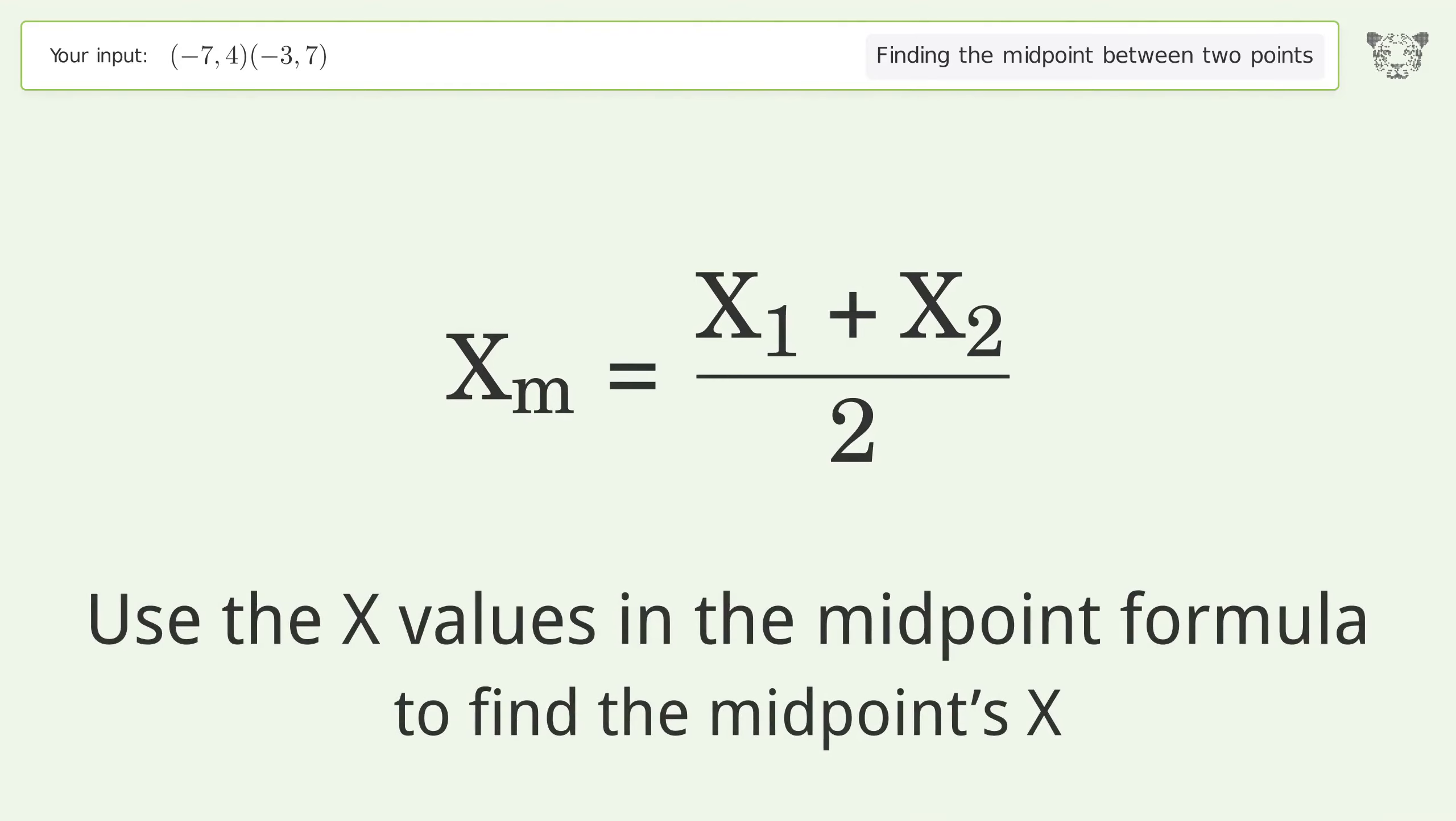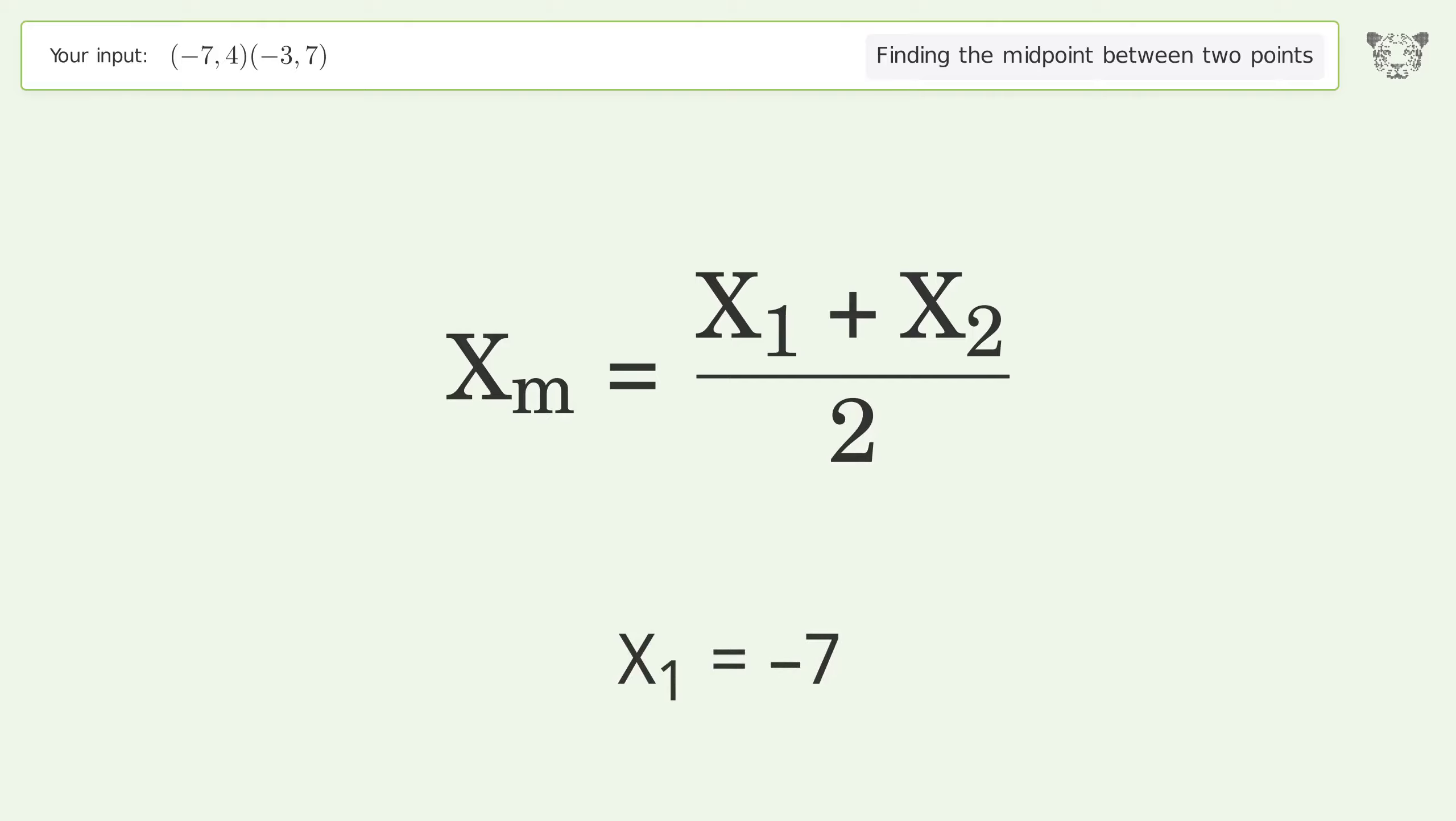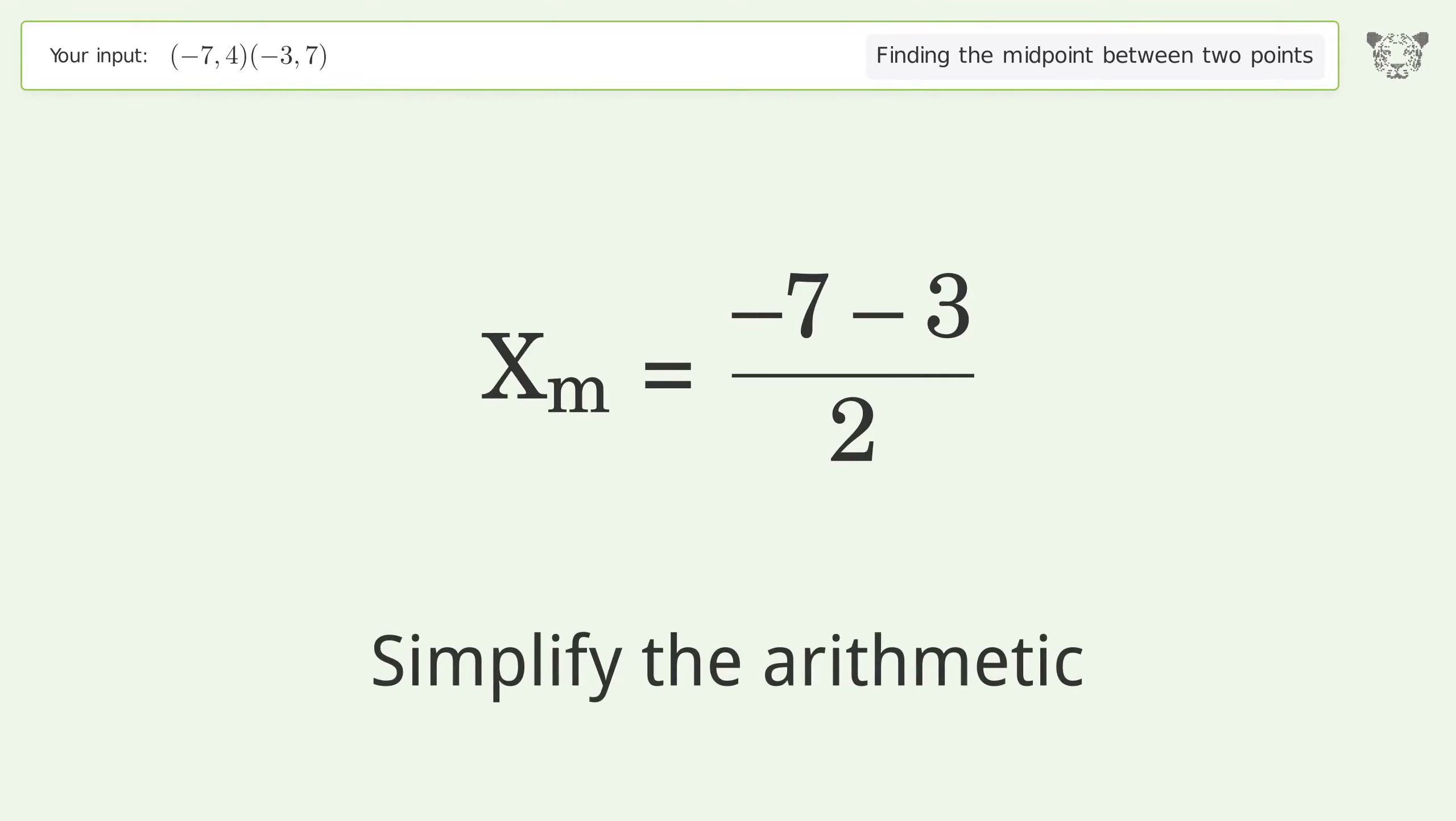Use the x values in the midpoint formula to find the midpoint's x. x1 = -7, x2 = -3. Simplify the arithmetic.